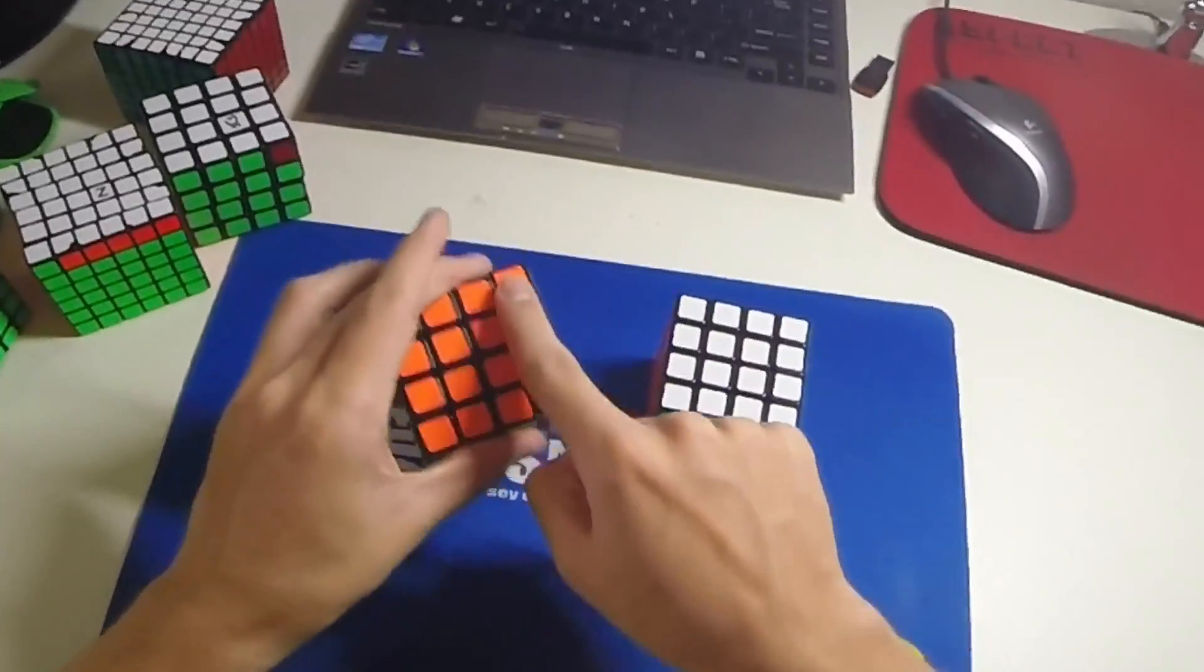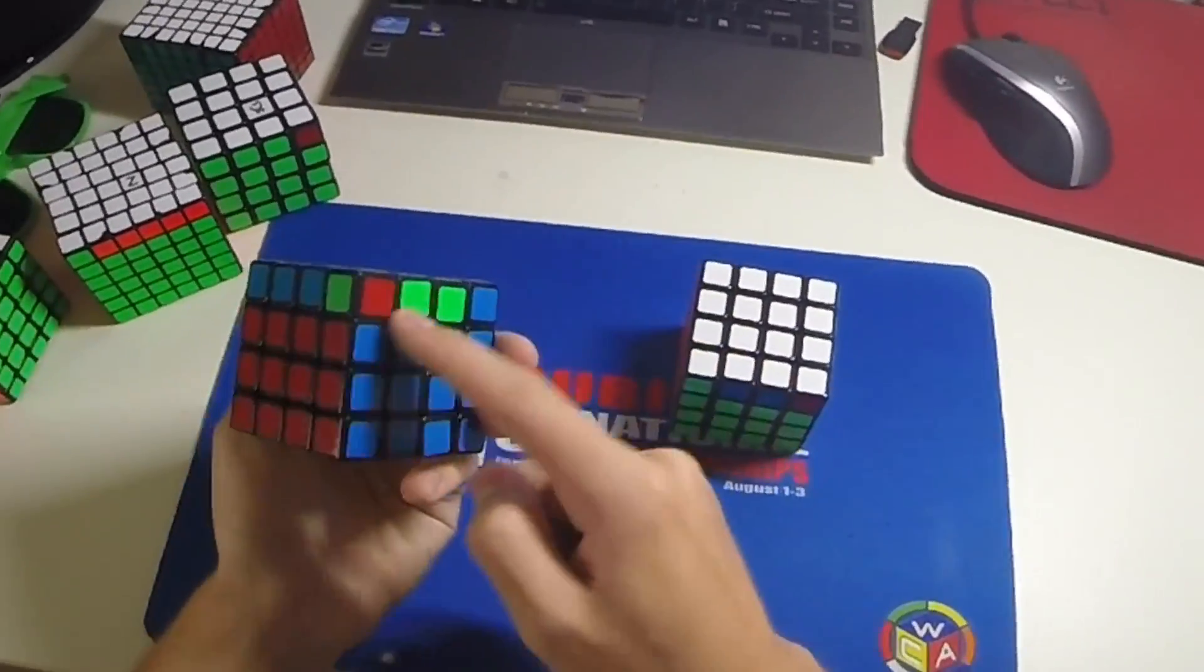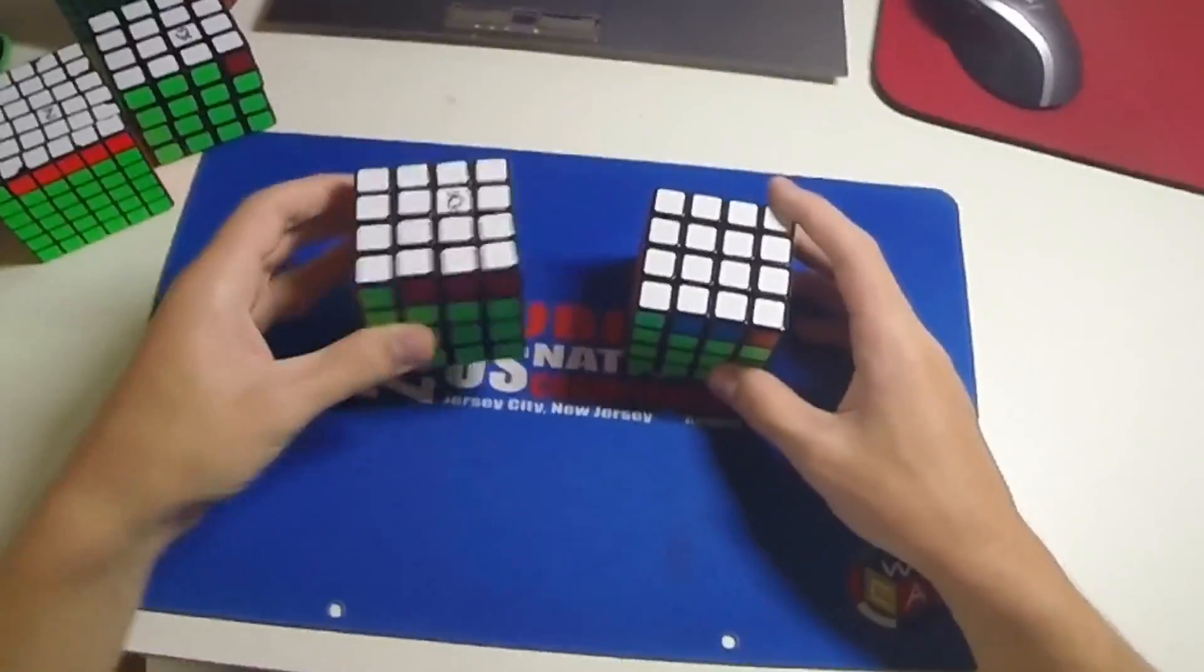So we have this full bar here, and then we've got this sort of block and these weird things at the back. So we've obviously got PLL parity.